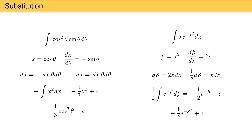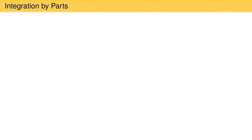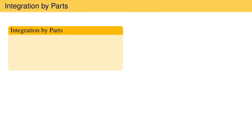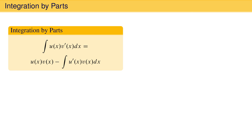Substitution works well when one part of the integrand is the derivative of another portion, as was the case here. Even when this is true, some trial and error may be required. Another method of integration that helps reduce integrals to simpler forms is integration by parts. In this technique, we visualize an integral as a product of some function u of x and the derivative of a different function v prime of x. The result is u of x times v of x minus the integral of the derivative of u of x times v of x. This can be derived by integrating the expression for the derivative of a product of functions.